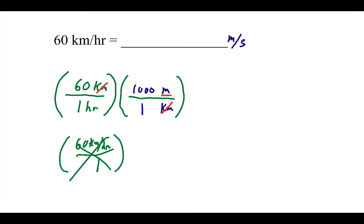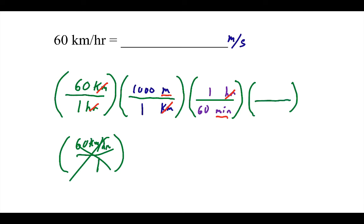Next comes hours. Hours is on the bottom of the first fraction, so it needs to be on top of the other fraction. I don't know off the top of my head how many seconds are in an hour, but I do know how many minutes are in an hour: one hour is 60 minutes. That gets rid of my hours, but now I have the unit minutes, which is still no good — I still want seconds. So I need another parenthesis. I need minutes on top to cancel, and I want seconds on the bottom. One minute is 60 seconds — that cancels the minutes out. Now I have meters on top and seconds on the bottom, which is what I'm looking for.